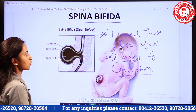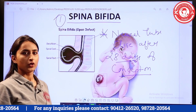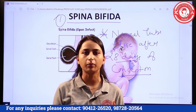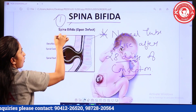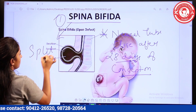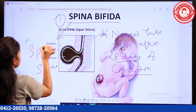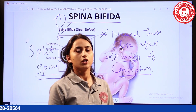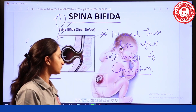In neural tube disorders, the first is spina bifida. What is the meaning of spina bifida? Spina bifida means 'split spine'. Sometimes in exams, a question comes: what is another name for spina bifida? So spina bifida is the split spine.